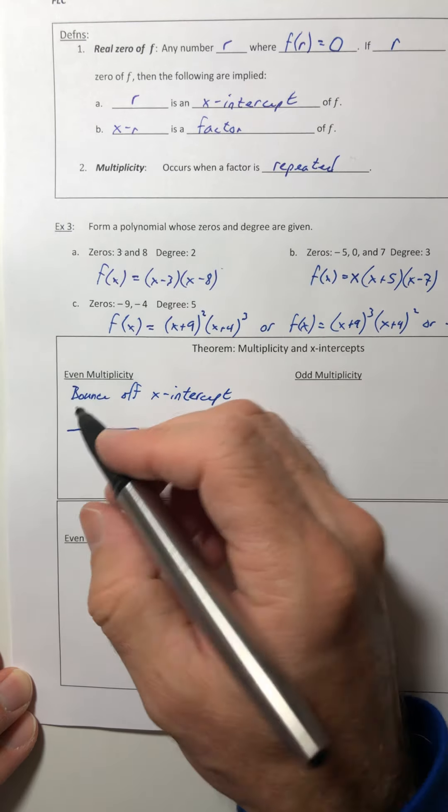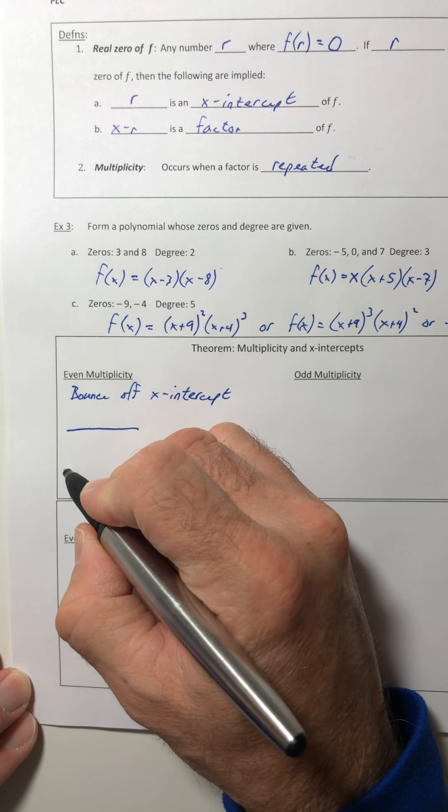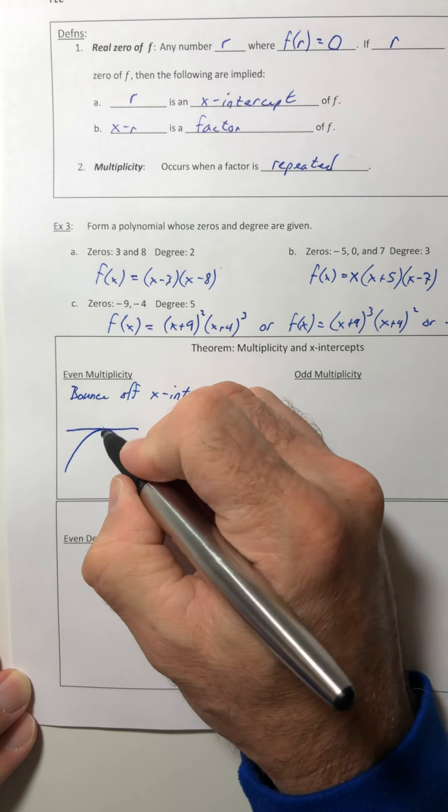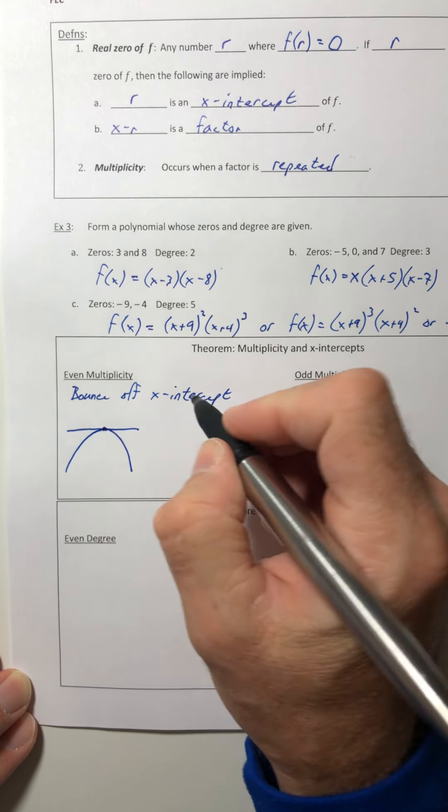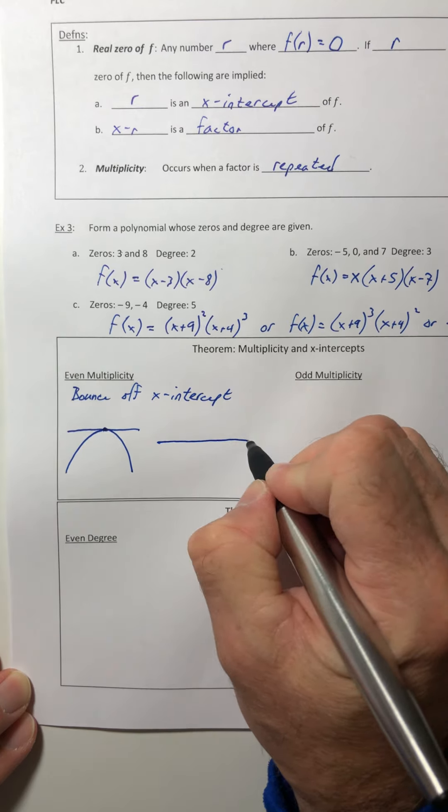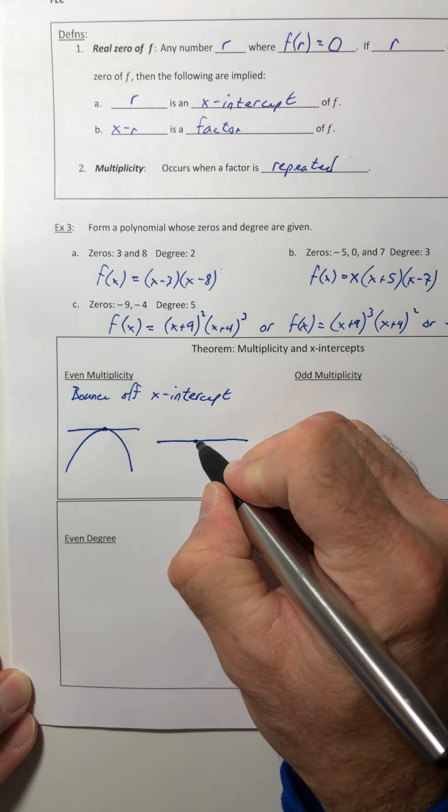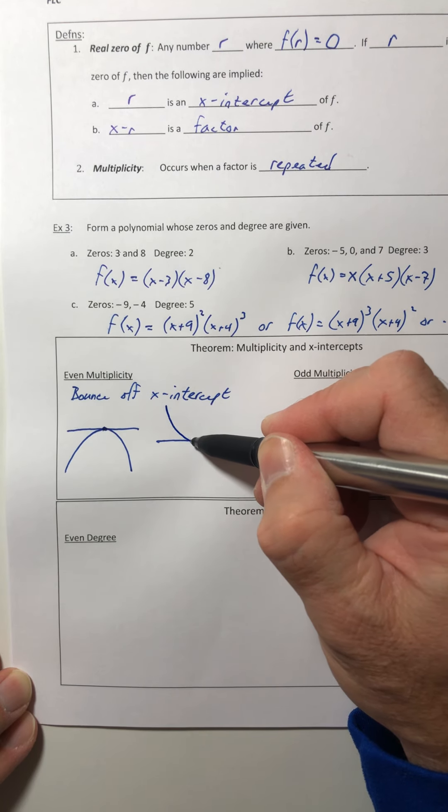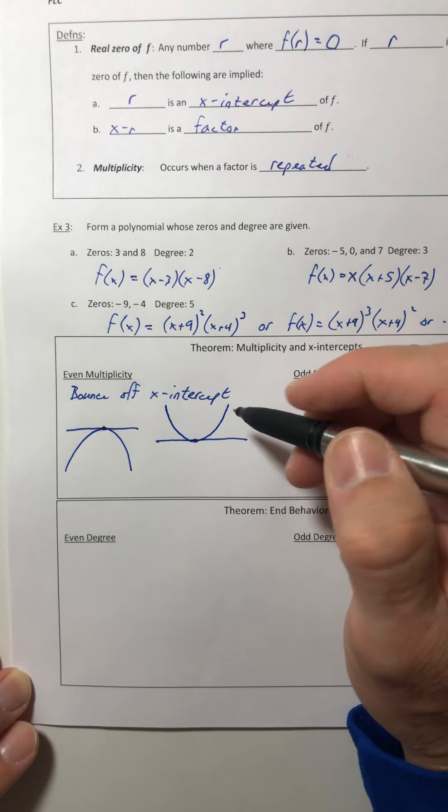And it just depends on what direction it's coming from. So if we worked our way from left to right, if it's coming up from the bottom like that, it's going to hit your intercept and then bounce right off. Or if it's coming down from the top, let's say that's the intercept, but it's coming from up here. It's going to come down. It's going to bounce it and go just like that.